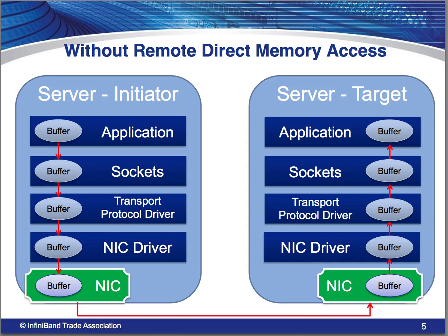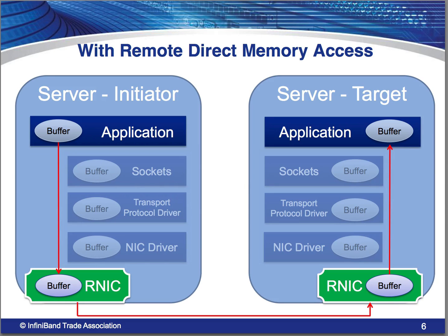Slide five gives you a diagram of traditional ways of moving data. As you can see, each step from application down to the NIC is a process. Data is moved, CPU is involved. There's a lot of delay between when the application kicks off the request and it actually gets onto the wire and back up to the application on the other side. The next slide shows a simplified version of RDMA — a very simple interface between the application and the adapter card. This is why we call it bypass: it bypasses a lot of the processes, gets the data on the wire very quickly, and gets the data off the wire equally as quickly, reducing the wait time of the target application for the data.